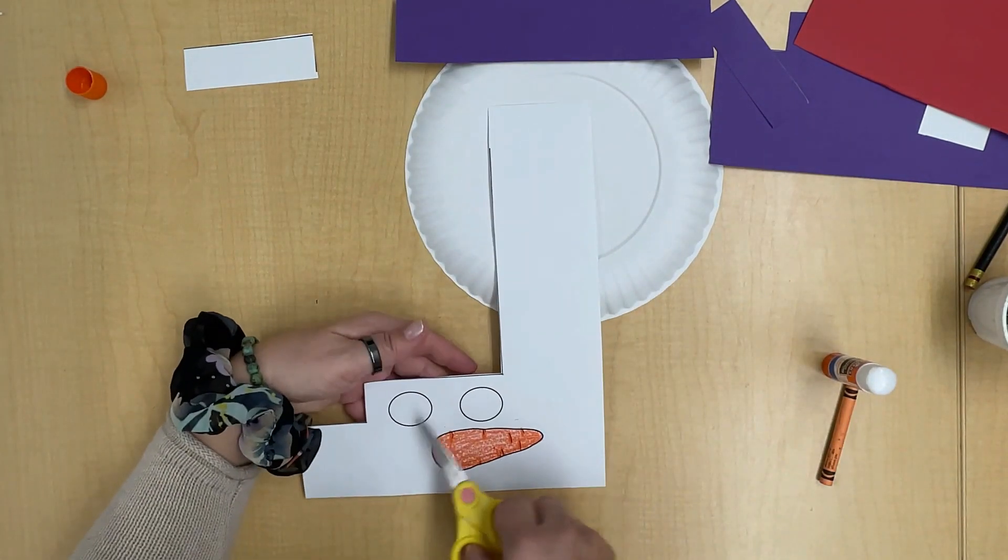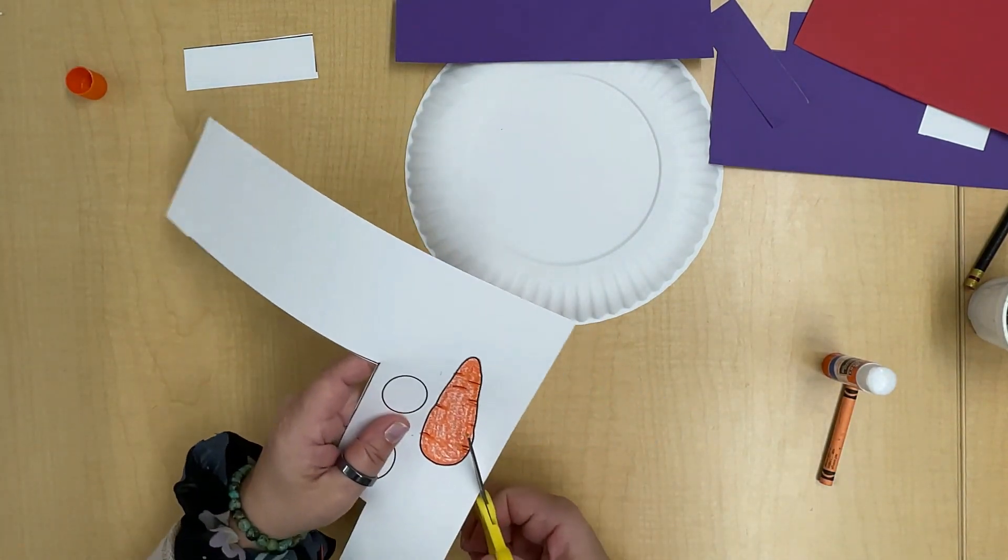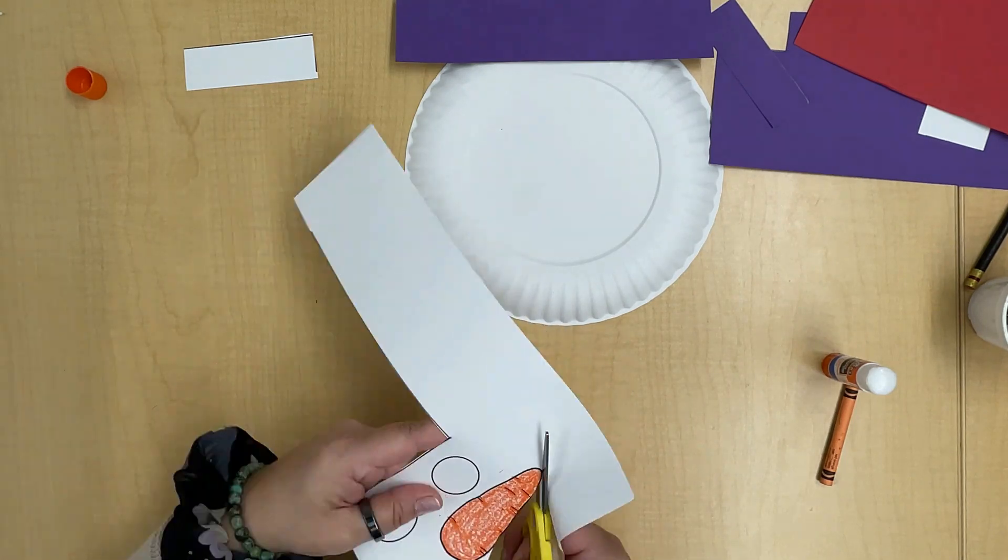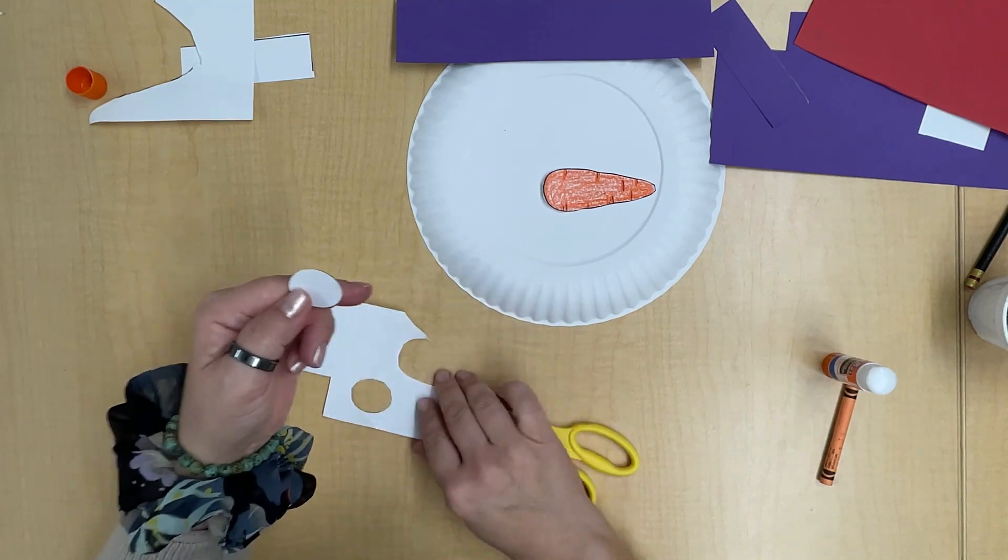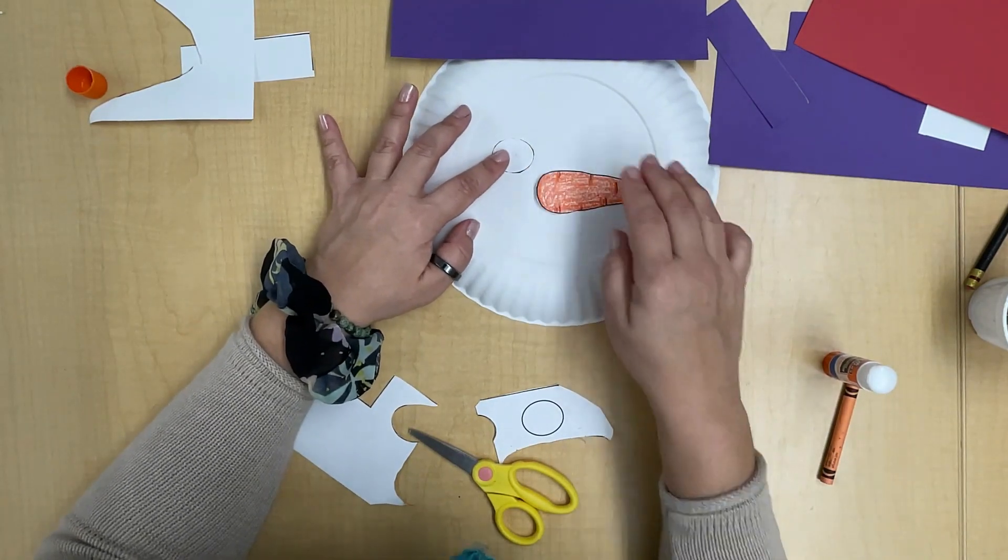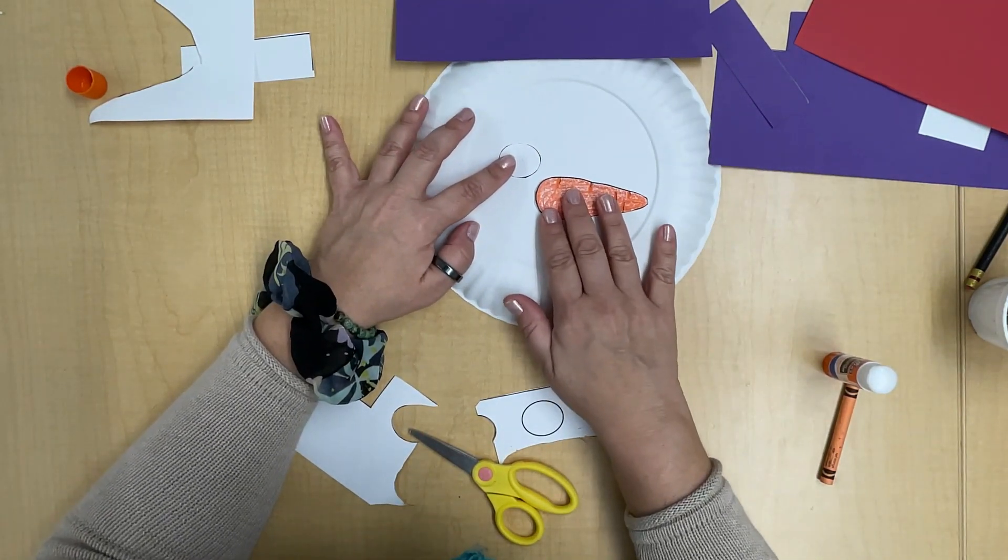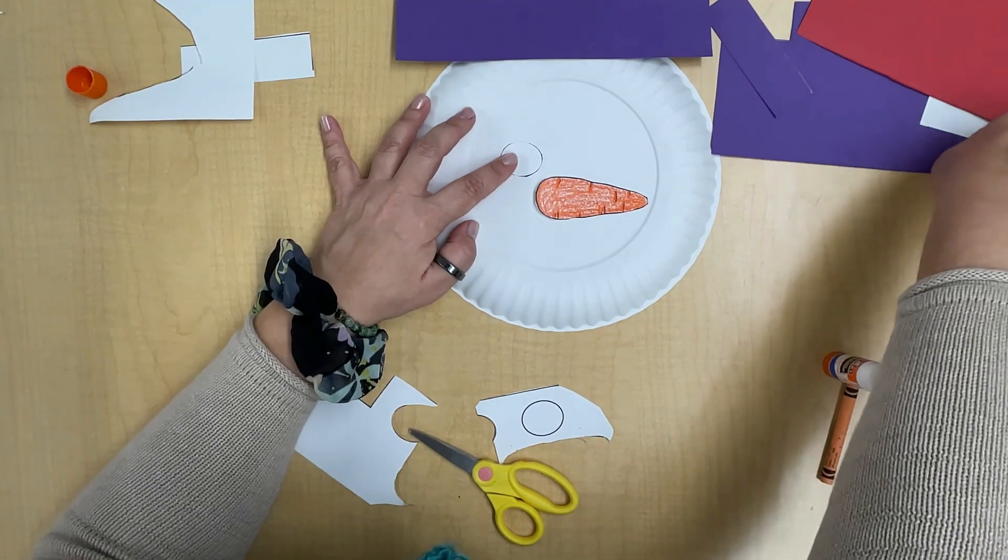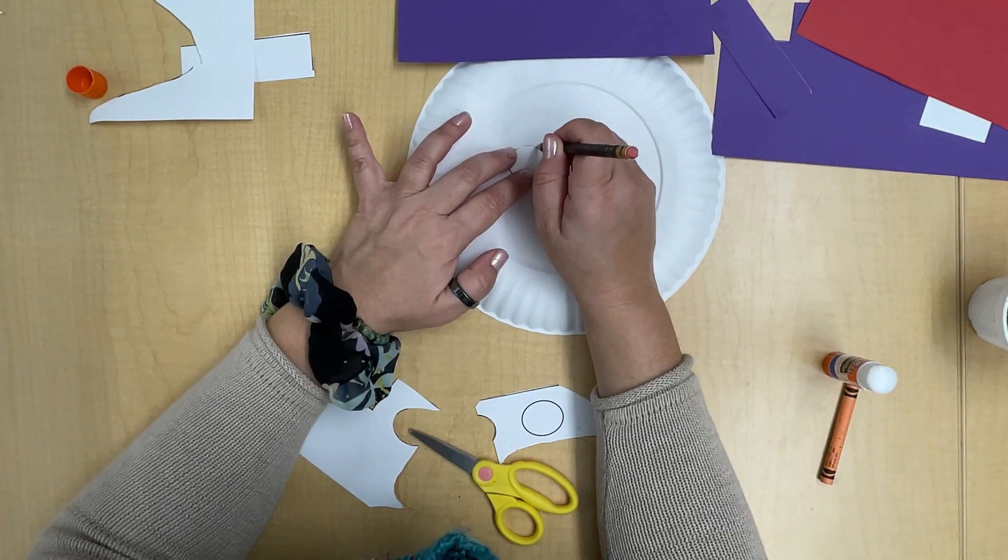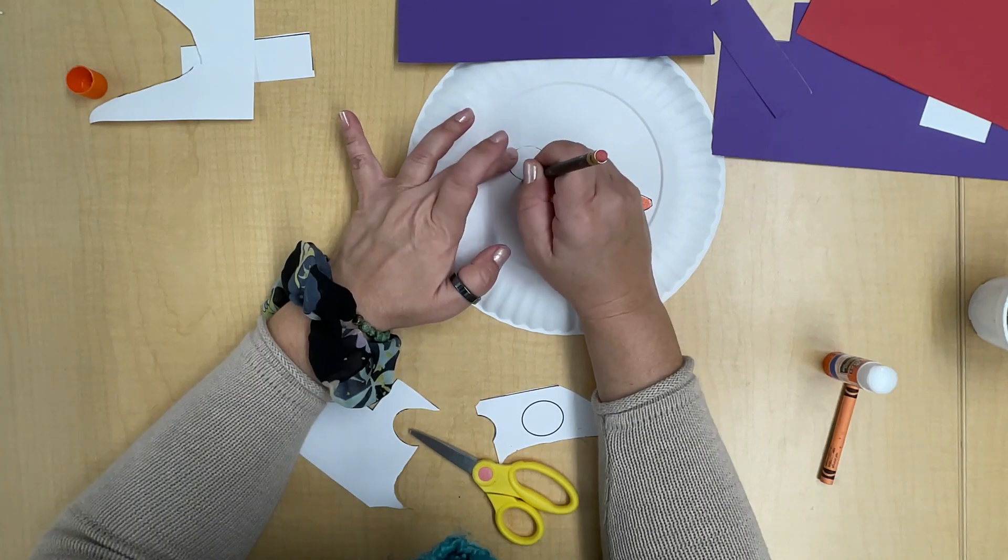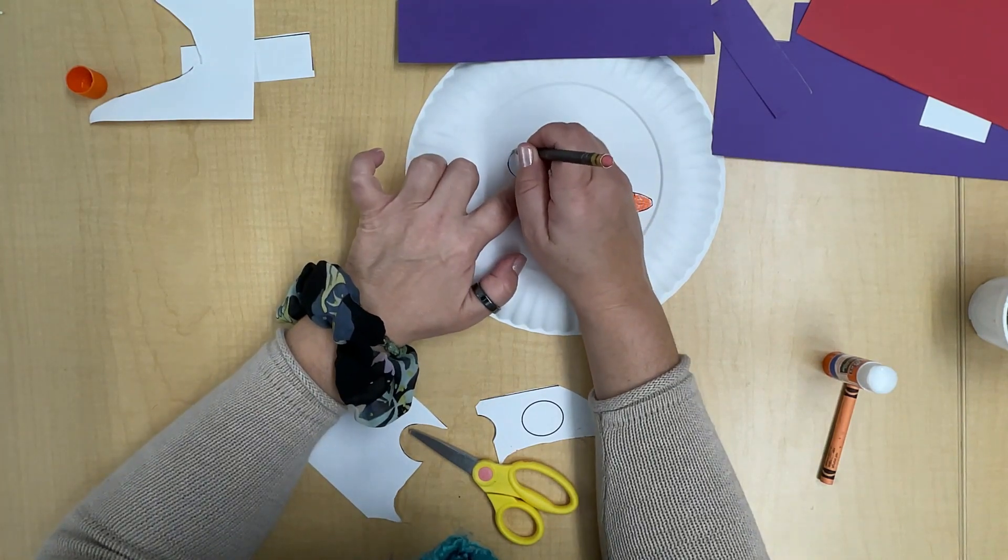Now I'm going to cut out these pieces. I'm just going to cut out one eye so I can place my nose and my eyes. I'll use my pencil to draw around my eyes here.